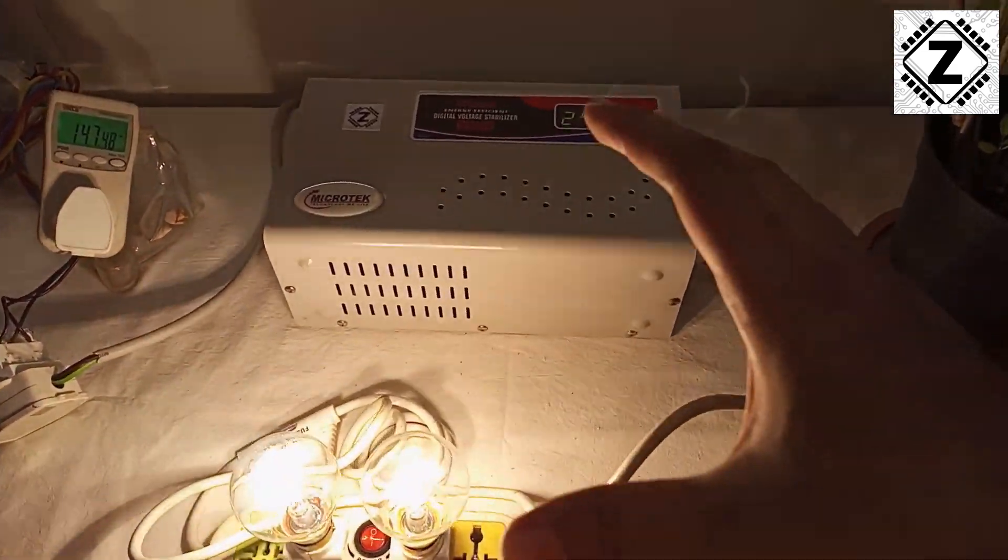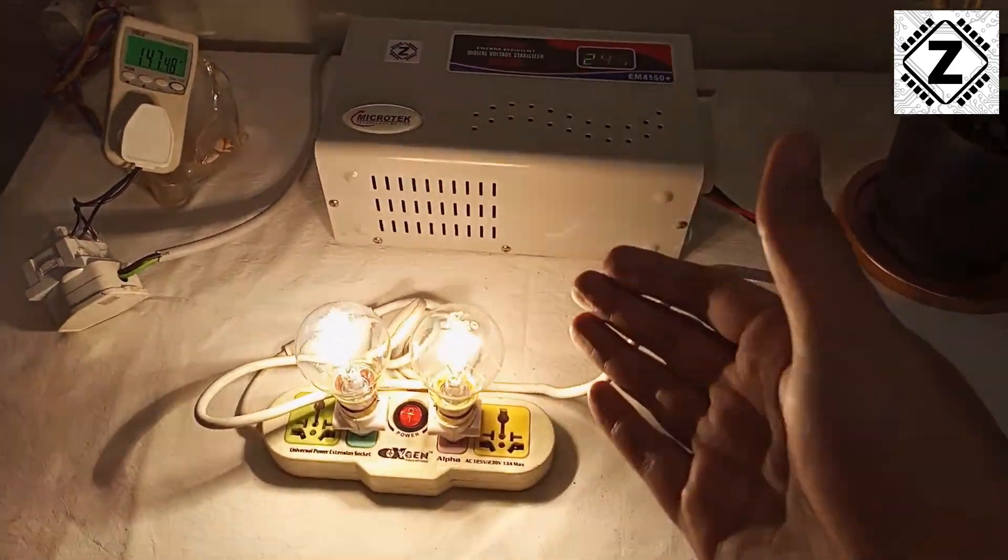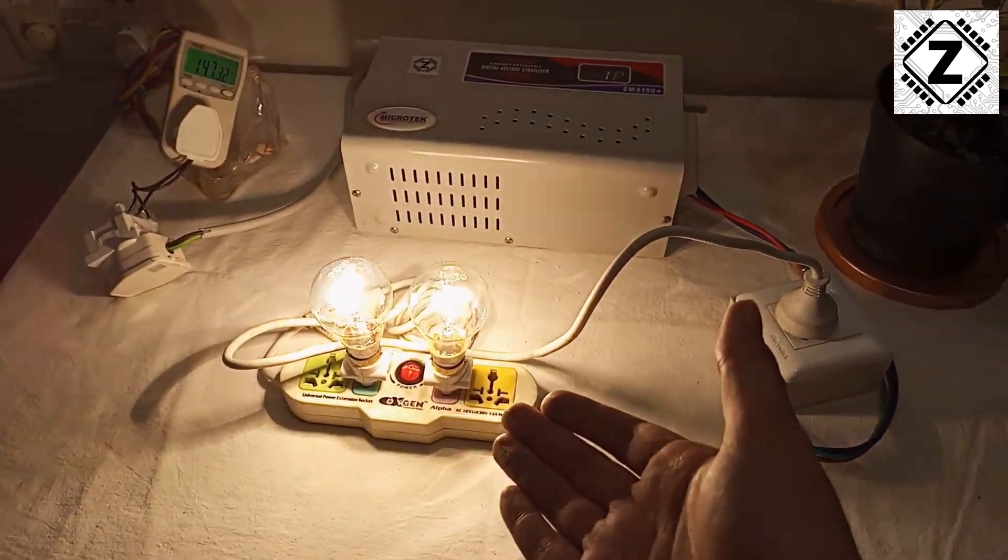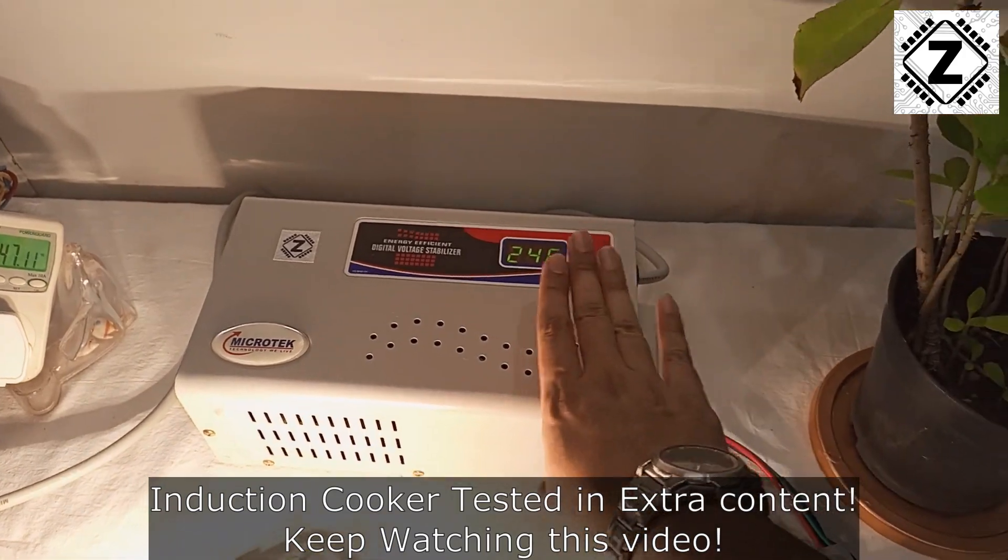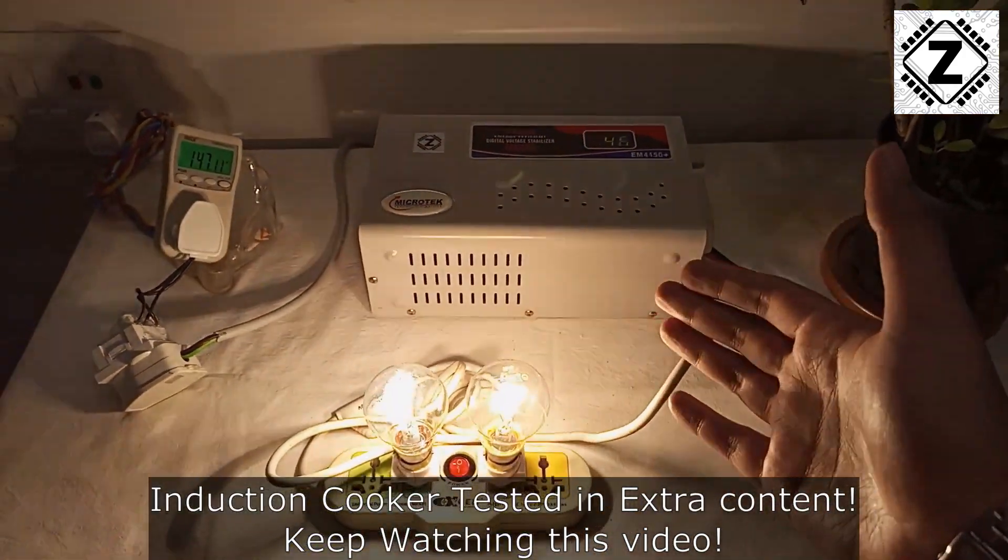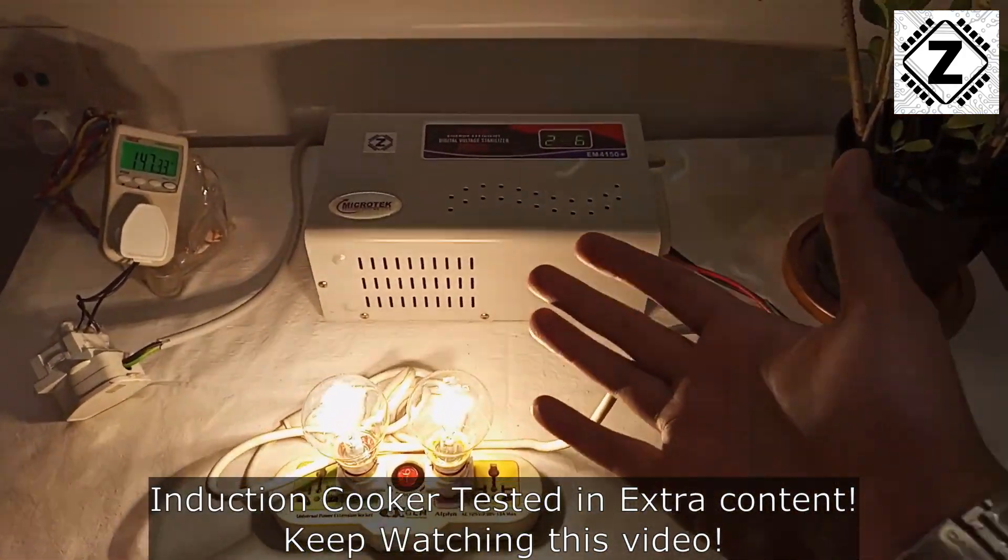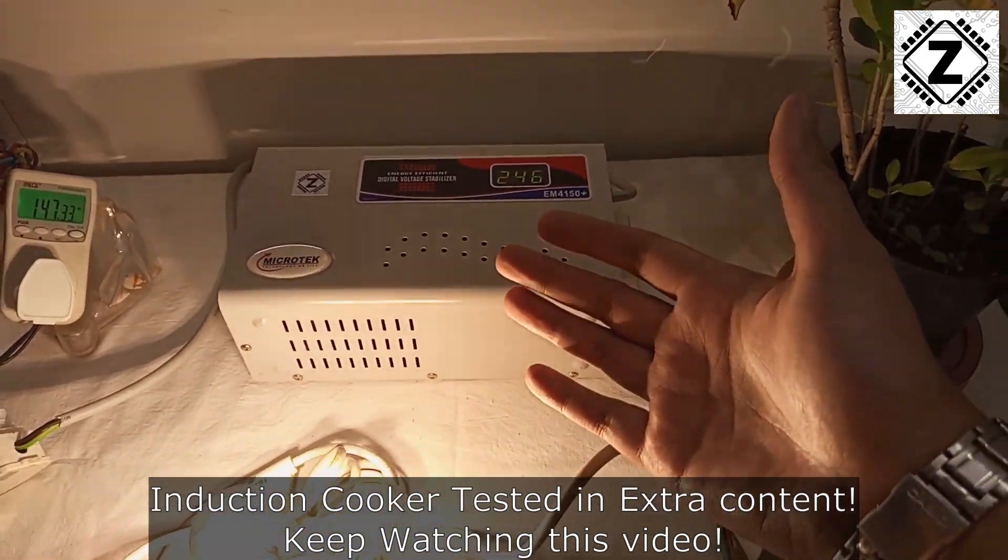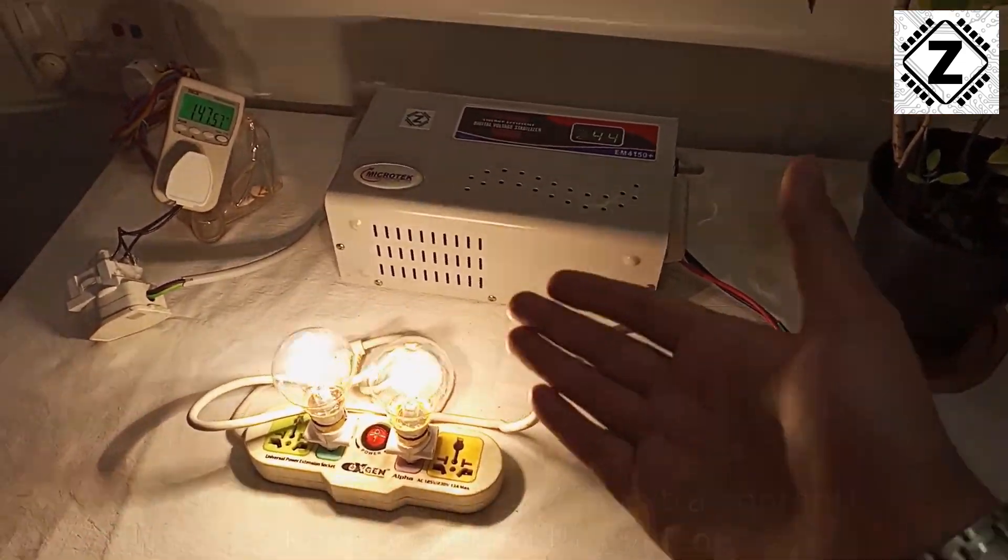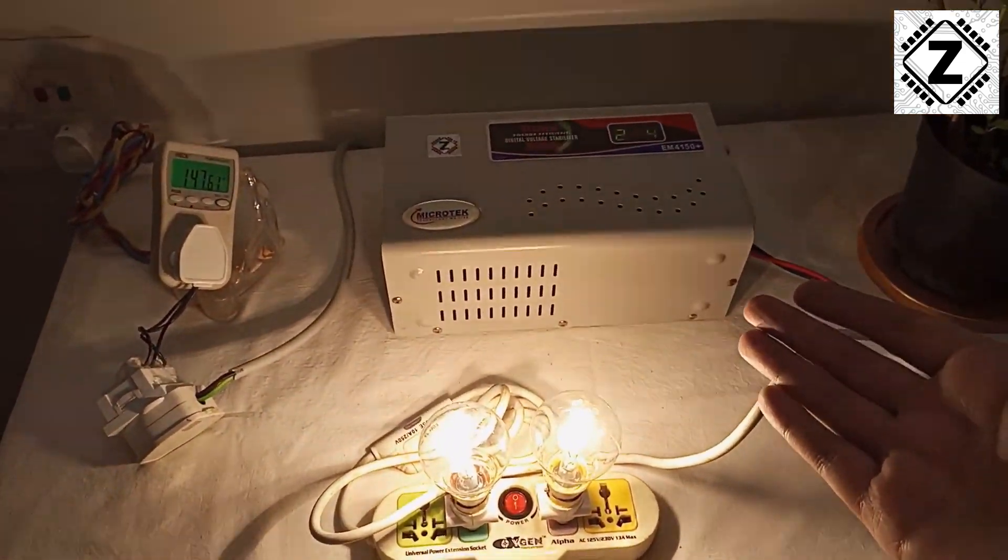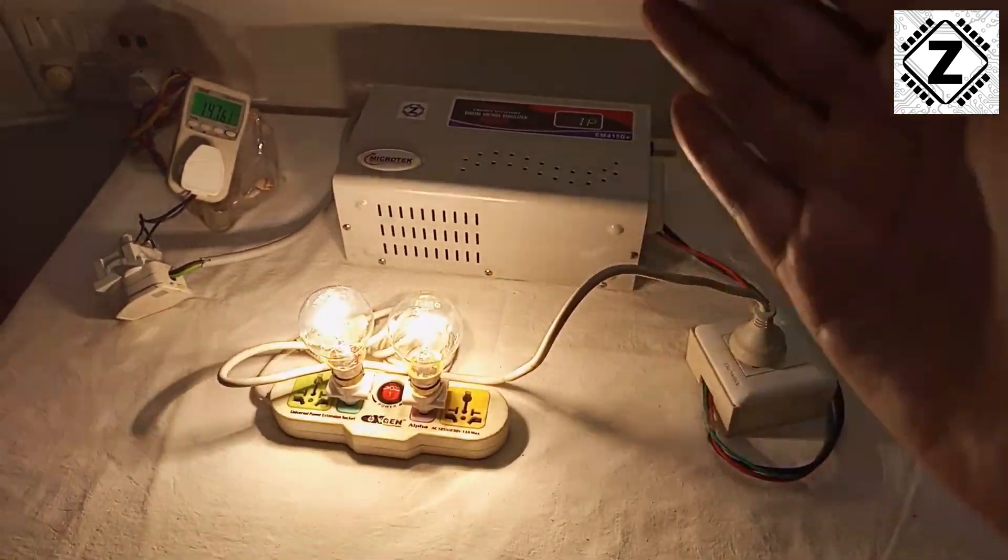We can say that roughly 10 watts extra is what this thing consumed for passing the power. Whatever this figure would be in percentage as an efficiency, I'll put it over here. One thing I'd like to remind you is that this kind of power consumption, 100 or 150 watts, is child's play for this kind of stabilizer. This is an AC stabilizer. If I find a heavier load, I'll try putting all those measurements in the extra content section.